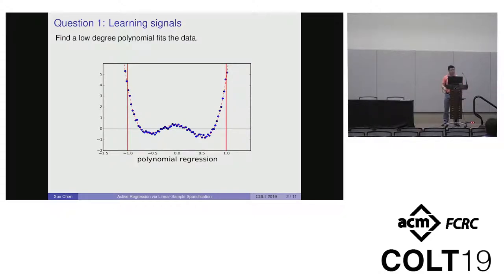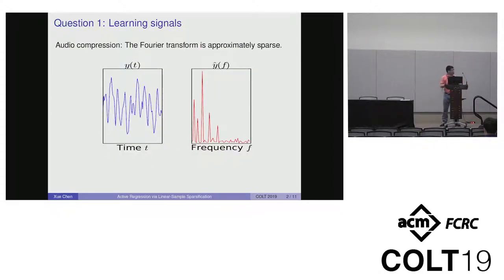A classic problem that motivates this work is polynomial regression, which finds a low-degree polynomial that fits a set of data points. Another problem we consider is sparse Fourier transform, where signals are approximated by a small sum of Fourier characters. Now let me give you the formal definition.